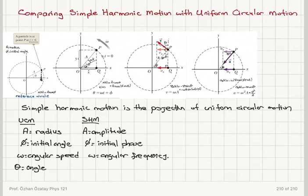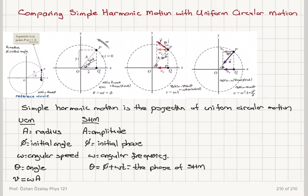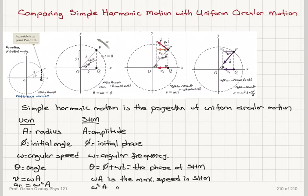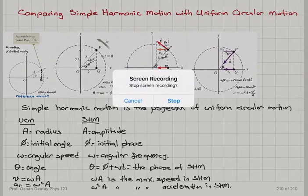The angular displacement as a function of time, theta — which is the angle or angular displacement in uniform circular motion — equals phi plus omega*t, and that is the phase of simple harmonic motion. The constant speed omega times A in uniform circular motion corresponds to the maximum speed in the corresponding simple harmonic motion. Similarly, the centripetal acceleration omega squared times A in uniform circular motion is the maximum acceleration in simple harmonic motion. So there is a one-to-one correspondence between simple harmonic motion and uniform circular motion.